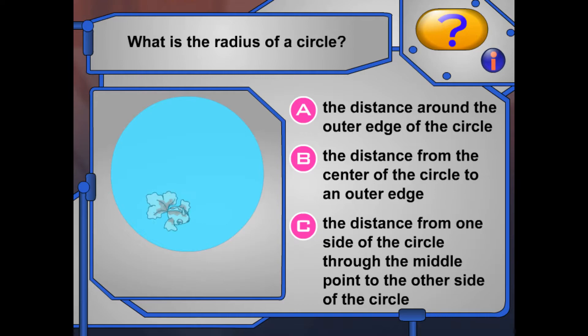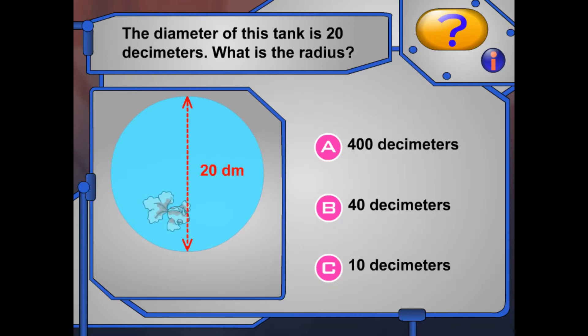The area of a circle is the radius squared times pi. What is the radius of a circle? Is it the distance around the outer edge of the circle? The distance from the center of the circle to an outer edge? Or the distance from one side of the circle through the middle point to the other side of the circle? Right! The radius of a circle extends from the center to the outer edge of the circle. The diameter of this tank is 20 decimeters. What is the radius? Right! The radius is half of the diameter, or 10 decimeters.